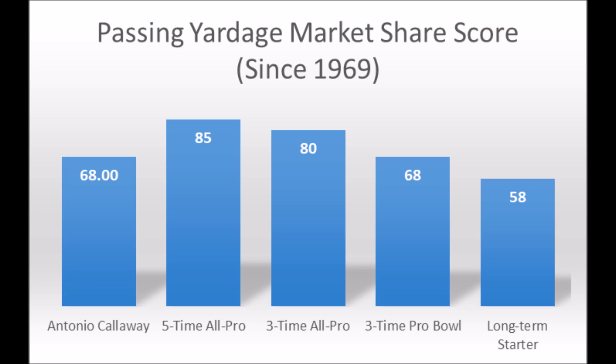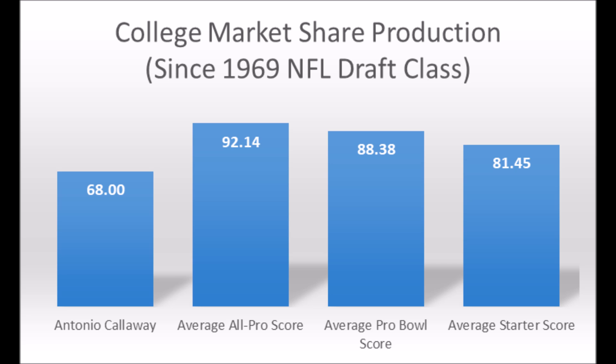Next is Antonio Callaway, wide receiver out of Florida. His passing yardage market share production score was 68 out of 100, which hits the three-time Pro Bowl level since the 1969 NFL draft class. However, looking at the averages at the position, it doesn't look impressive — the all-pro average is about 92.14, Pro Bowl is about 88.38, and even starters average 81.45. Callaway's production is low largely because he missed most of last year for various reasons, and character issues do impact a player's ability to reach Pro Bowl or all-pro level if they're missing games due to suspension.